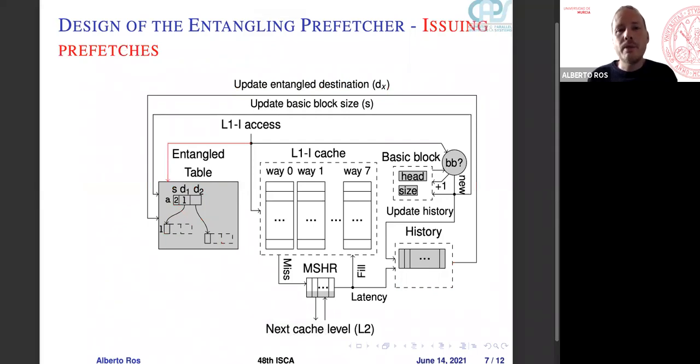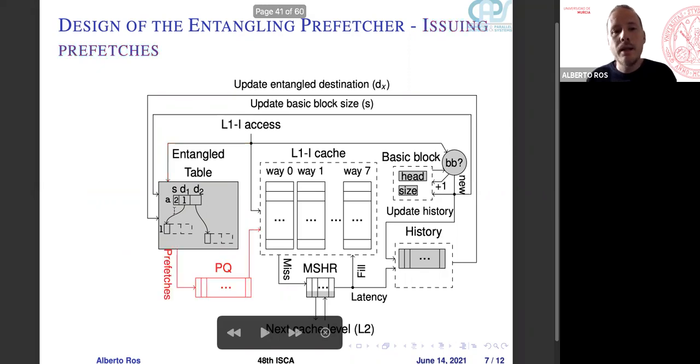Now we can issue the prefetches. So on each access, we check the entangled table. If there is a match, we can predict that it's a head of a basic block. And in this case, we will fetch the two next addresses of A and L and the next cache lines in the basic block of L. All these prefetches are stored in the prefetch queue that first checks the L1 cache for a hit. If not, we'll go to the next cache level.